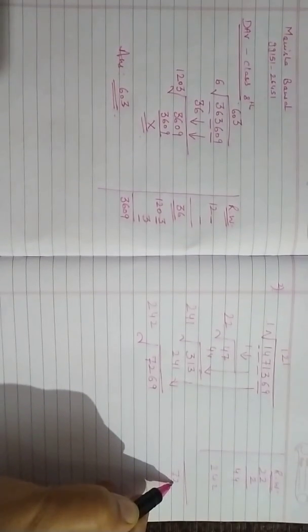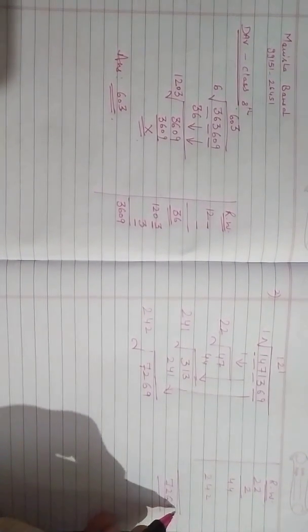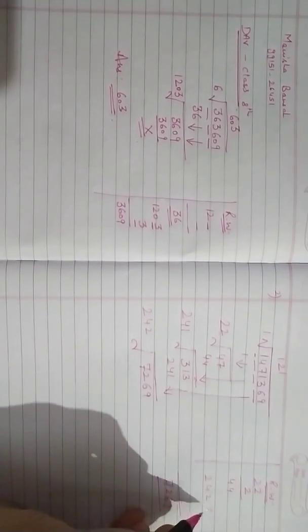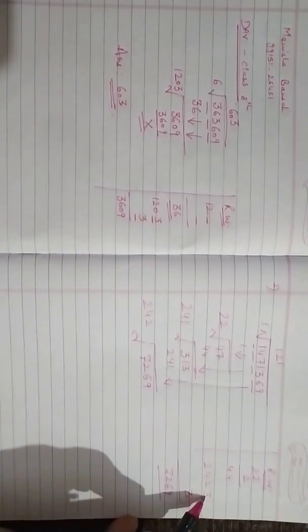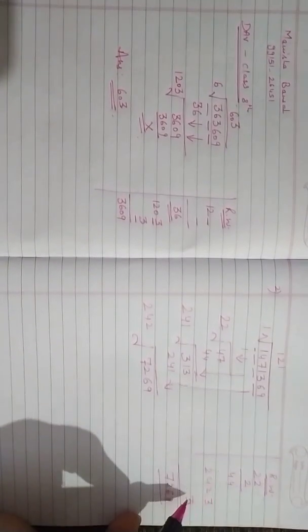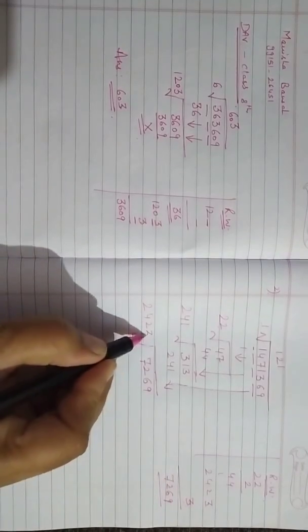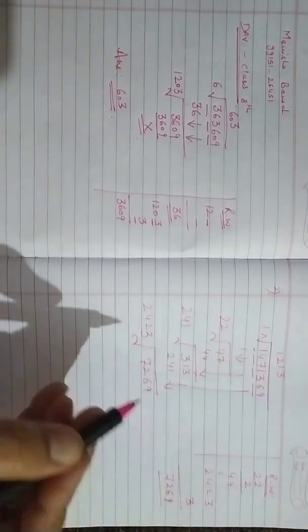Now 242, and let me see which number I can place here so that I'll get a number equal to 7,269. Let me try with 3. Three threes are 9, three twos are 6, three fours are 12 with 1 carry forward, three twos are 6 and 1 is 7. Yes, done. I'll place 3 here.